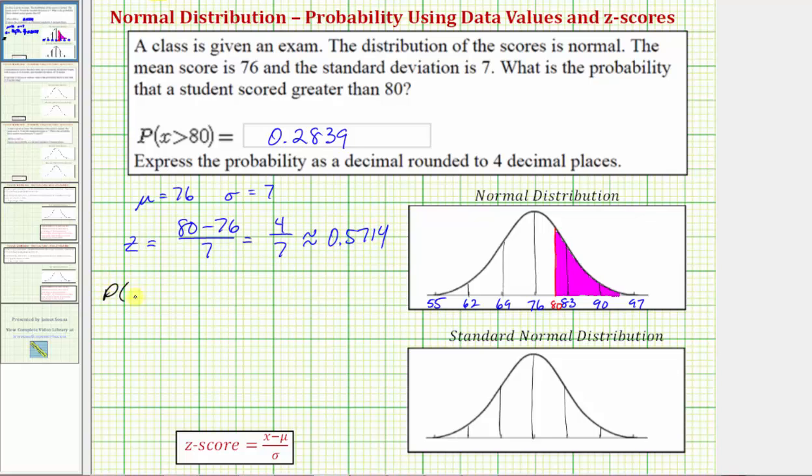Which means the probability that x is greater than 80 is equal to the probability that the z-score is greater than, we use the exact value of four-sevenths. Before we go back to the calculator, let's also model this on the standard normal distribution. Remember for the standard normal distribution, we have z-scores along the horizontal axis, where the z-score of zero would be here in the middle.